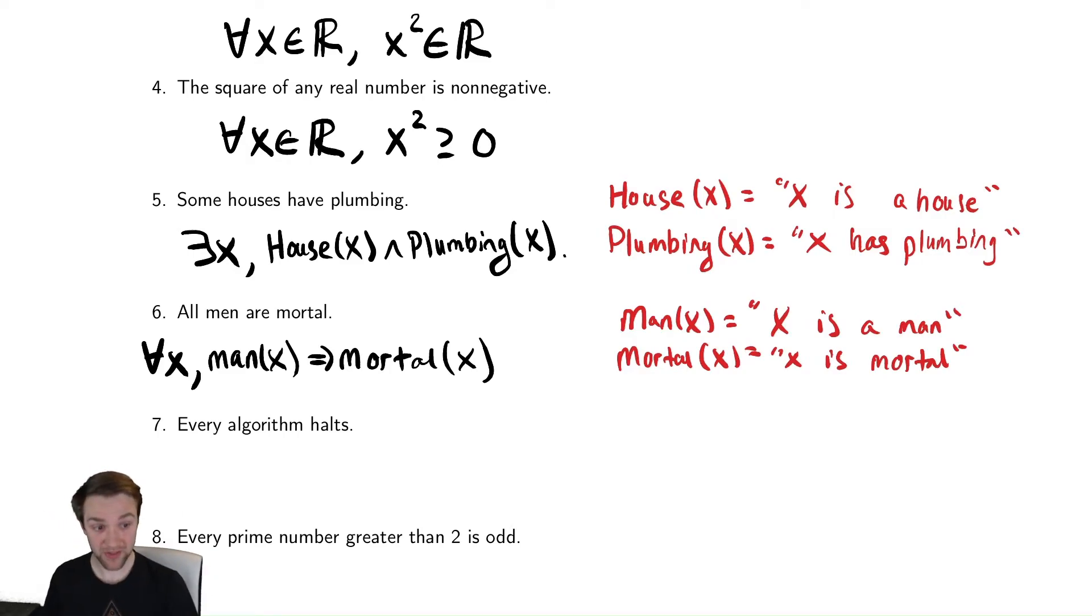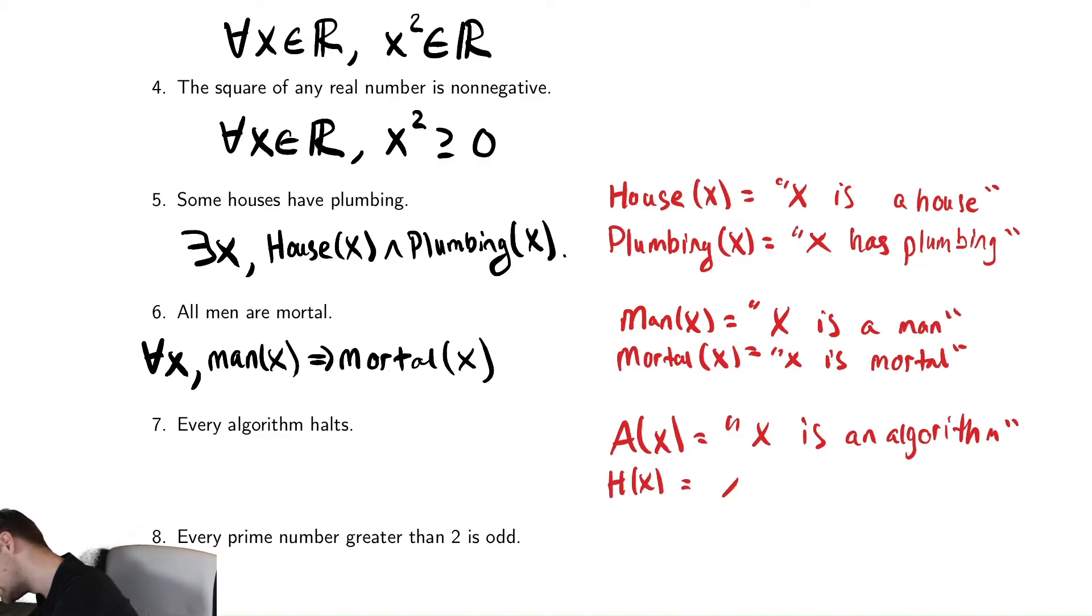The next problem says every algorithm halts. This is a known problem. It's called the halting problem. If you take a class in automata theory, you'll talk about that actual idea. For us, we're just going to try to write it in language and then move on with our lives. I'm going to show you that you don't need to always write these in really big ways. I could write something like A of x that says x is an algorithm, and H of x is x halts. Halts means stop. So this says that every algorithm stops, which is clearly false. You can write infinite loops. But just like before, every is just like all. It's that for every x, if it's an algorithm, then it halts.